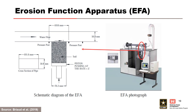The erosion function apparatus was developed by Jean-Louis Briot at Texas A&M University. The primary focus of the research was bridge pier and abutment scour, but also overtopping erosion. In the EFA, a soil sample is pushed until it is flush with a flume floor where water flows at a constant velocity. The sample is advanced to keep it flush with the floor, and the time to erode is recorded. Velocity is then increased and the process is repeated.